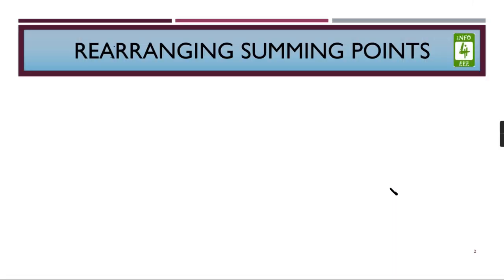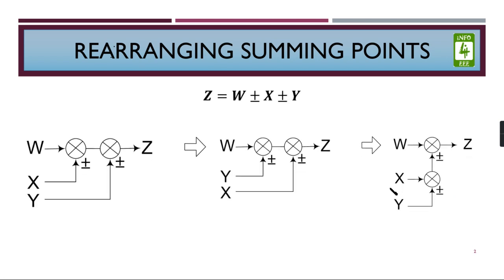The first topic is rearranging summing points. In this transformation, we can observe that if we have three inputs and one output, we can add any two inputs in any manner. We can add W and X first then add Y, or we can add W and Y first then add X, or we can add X and Y first then add W.